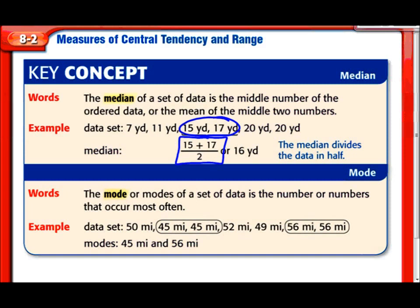Mode is the number that occurs most often. So clearly in this data set, there are two 45s and there are two 56s. So you can actually have two modes. You can have three or four modes, however many numbers appear most often.